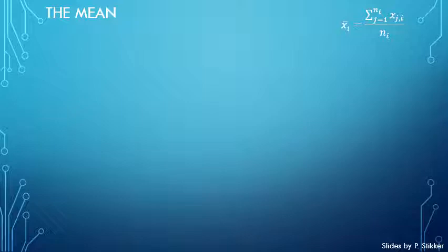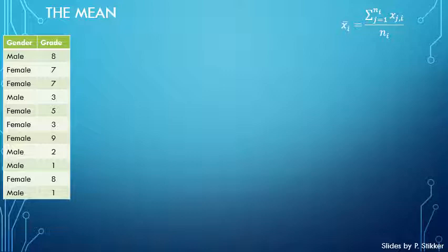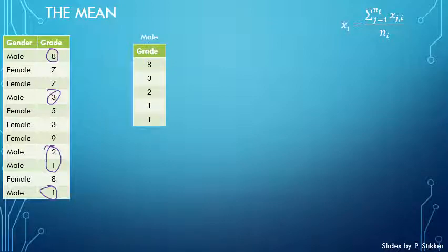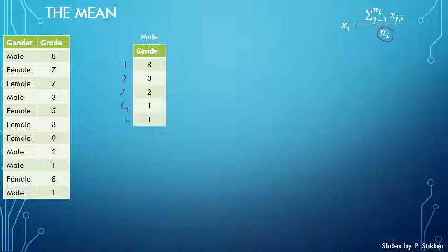To calculate the mean we have this formula — in essence it's just calculating an average. I have a few grades given by some students along with their gender. I split this up by category: male and female. For the male students I use the scores 8, 3, 2, 1, and 1. The first value to look for is N_i, the number of items in the category — I have 5 grades, so N1 equals 5.